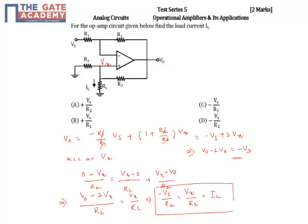So load current is nothing but minus Vs by R2. From the options, the answer is D.